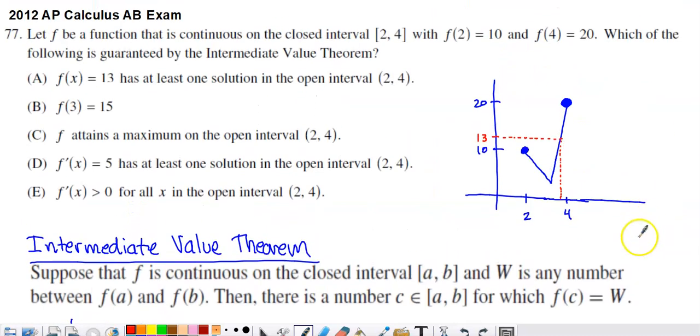So if we come back up to the graph, this first option, f of x equals 13. So is the y value, the function value, going to equal 13 at least once on the interval from 2 to 4? Well, 13 is in between these y values, 10 and 20. The function is continuous, so the theorem holds.